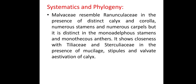Systematic and phylogenetic relationships: Malvaceae resembles Ranunculaceae in the presence of distinct calyx and corolla, numerous stamens and numerous carpels. But it is distinct in the monadelphous stamens and monothecous anthers. It shows closeness with Tiliaceae and Sterculiaceae in the presence of mucilaginous stipules and valvate aestivation of calyx.